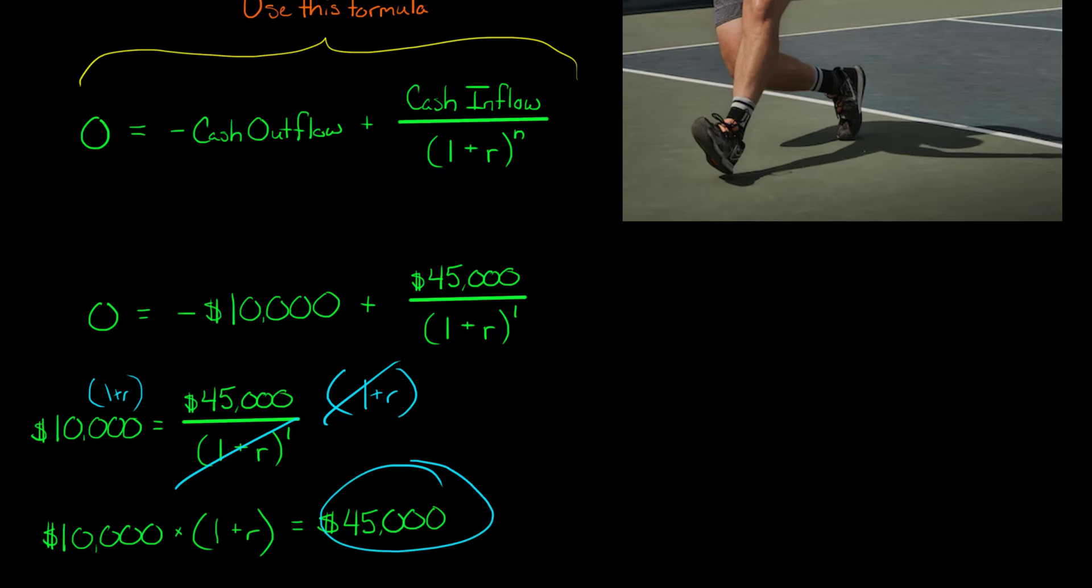And then this side, we just have the 45,000 because the one plus R canceled out. So we just multiply both sides of the equation by one plus R.